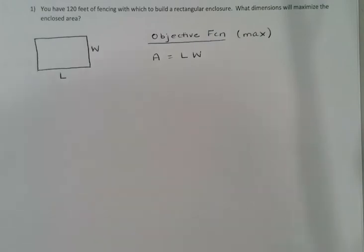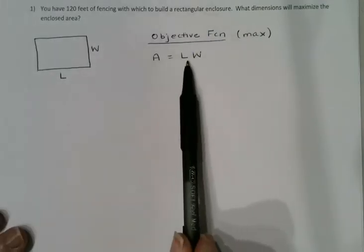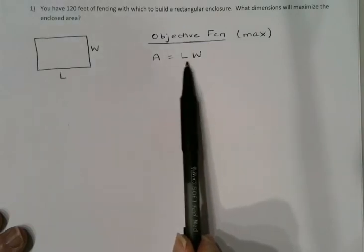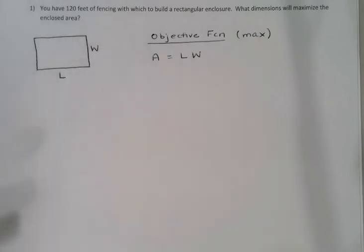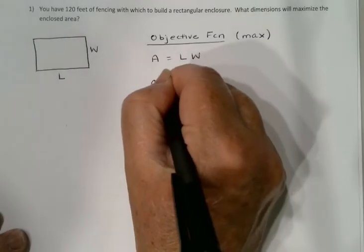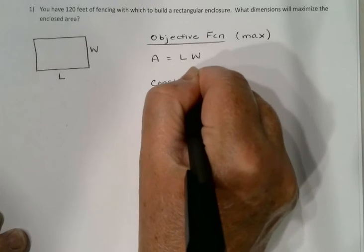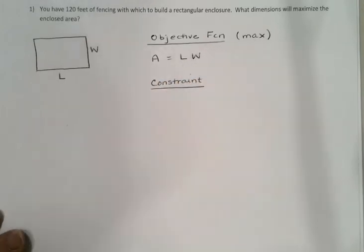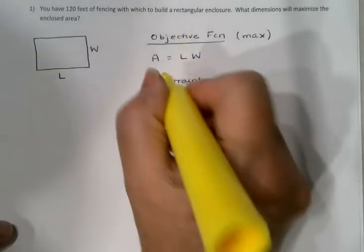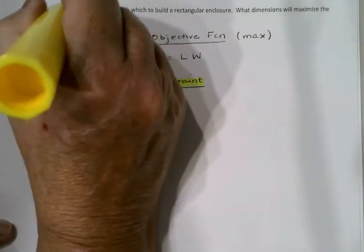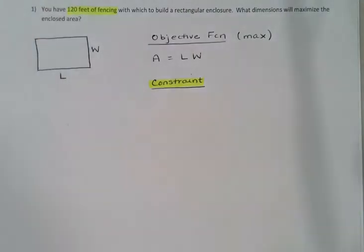Here's a perfect example of I've got too many independent variables. I can't have both L and W. I need just one variable on the right-hand side in order to actually be able to take a derivative. So we now look for a constraint. Is there other information that we know that might help us in this process? In this case, the answer is yes.